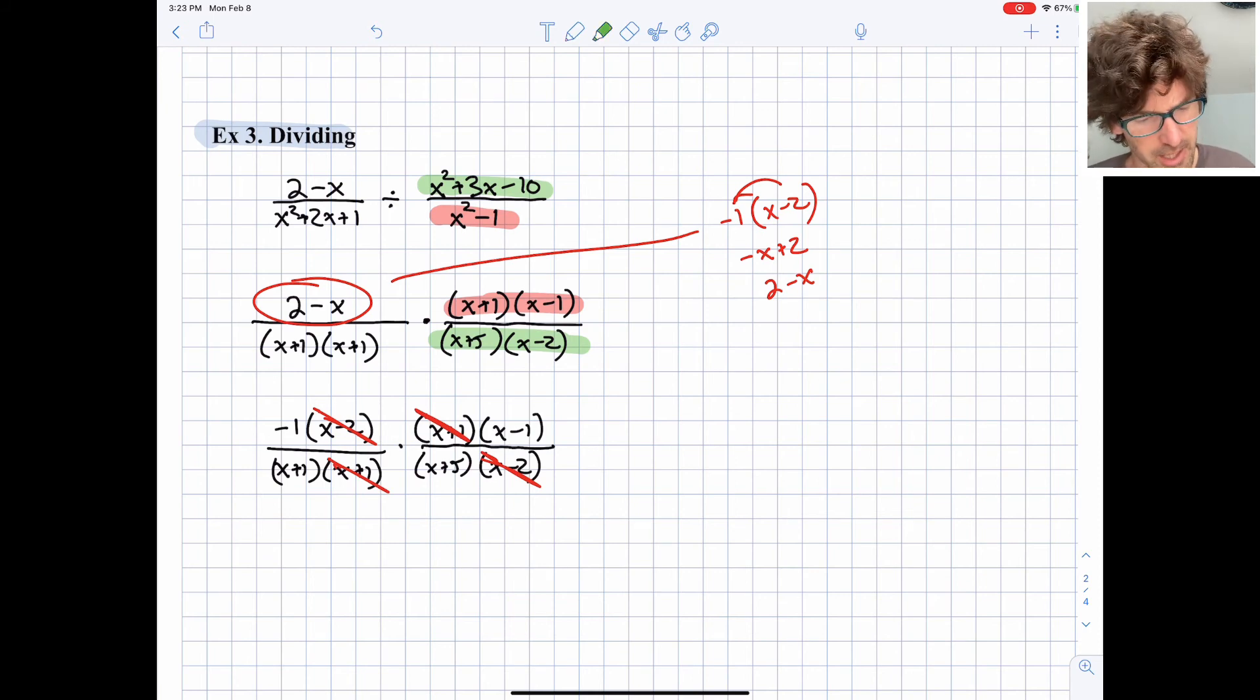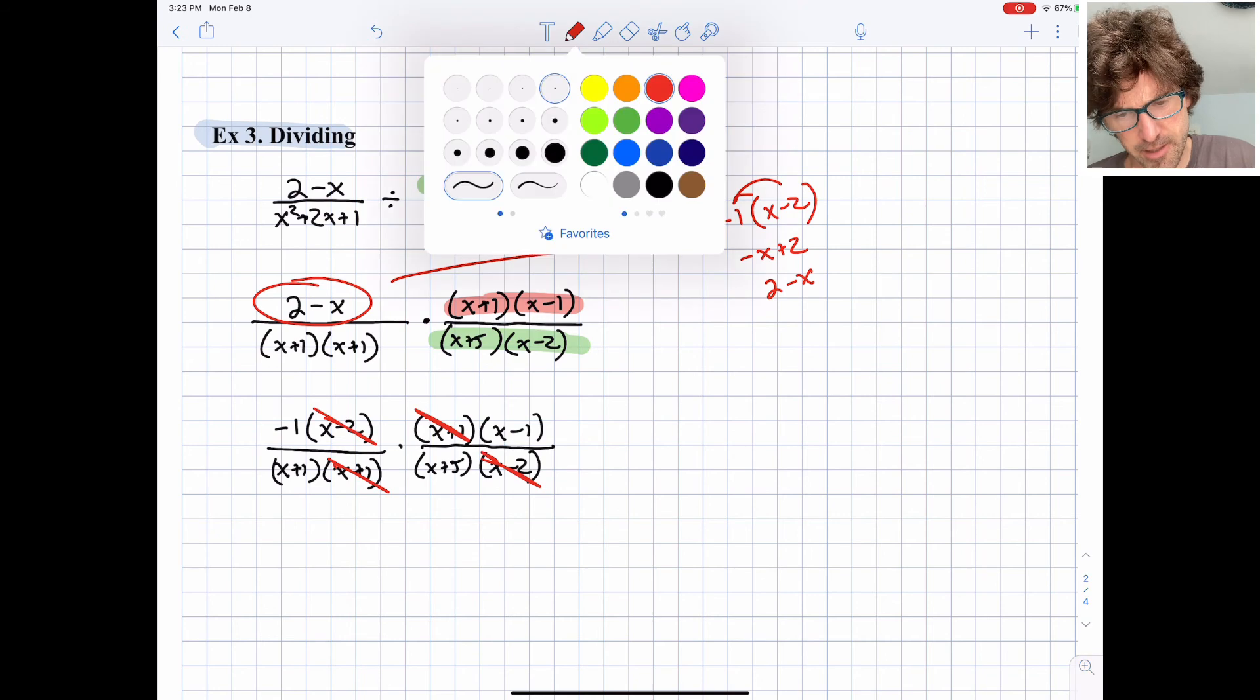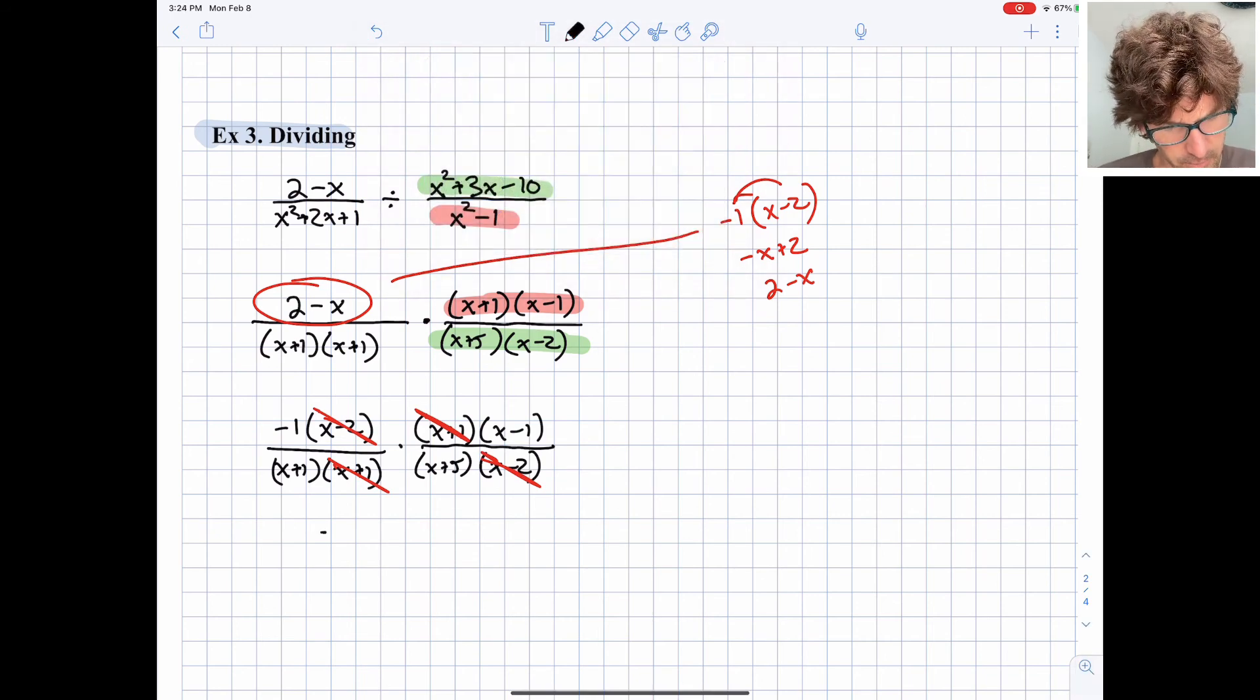Another common mistake might be to think that this negative 1 times this x minus 1 might result in a cancellation with that term down there. But we would need a negative x down in the denominator, which we don't have. So let's write our final form now. We have negative 1 up top, we have x minus 1 up top, and down below we have x plus 1 and x plus 5. That would be my final solution here.